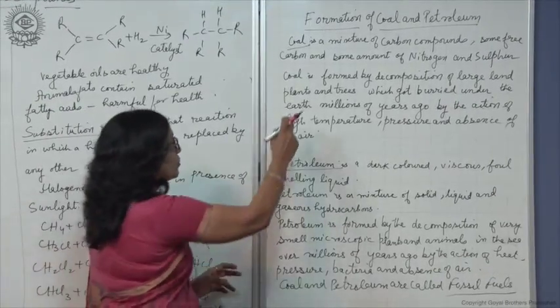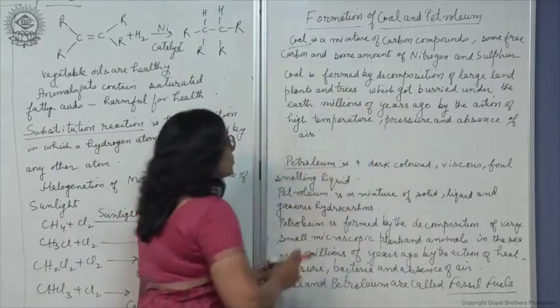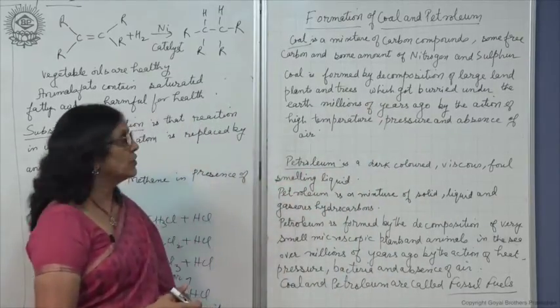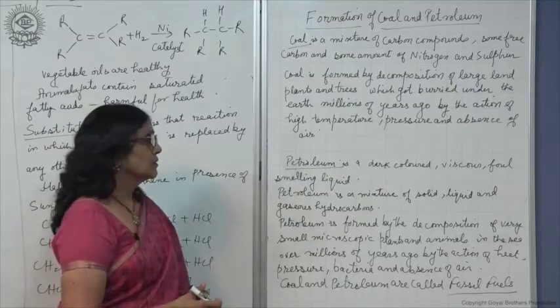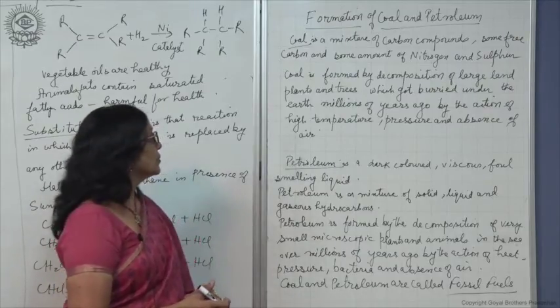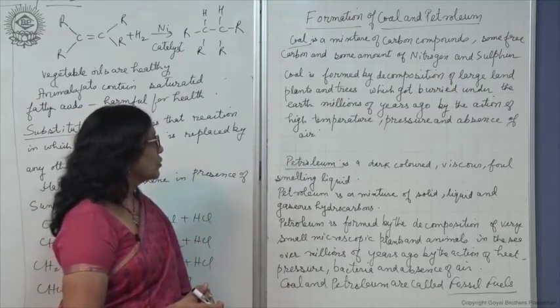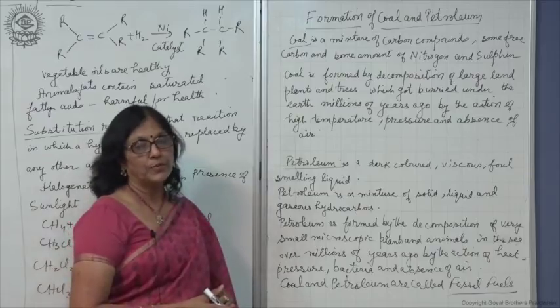Coal is formed by decomposition of large plants and trees which got buried deep under the earth over millions of years ago by the action of high temperature, pressure, and absence of air.